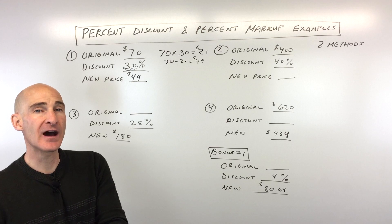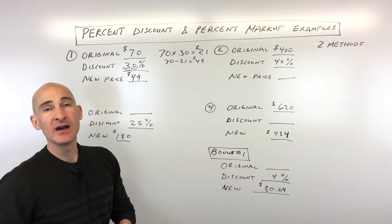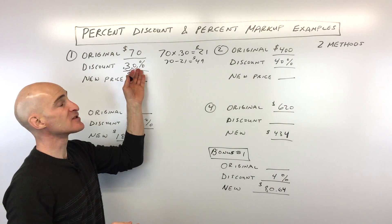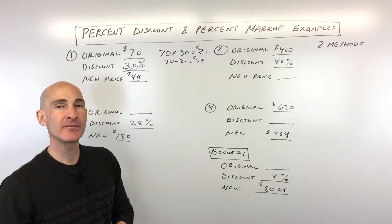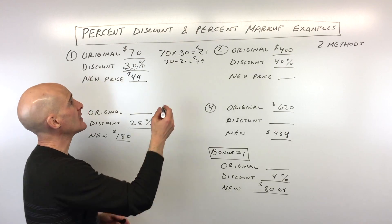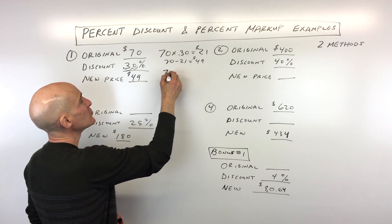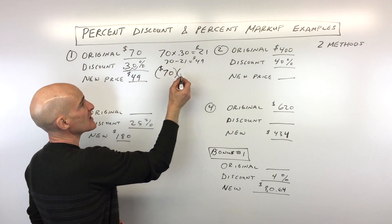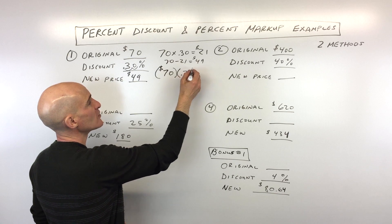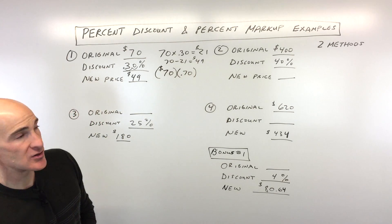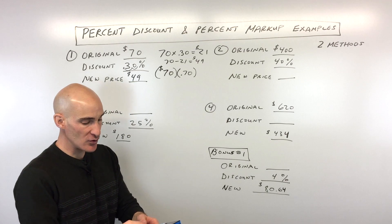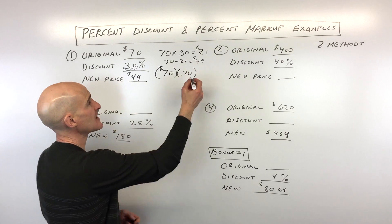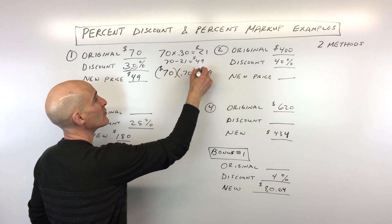Here's a quicker method: instead of focusing on what you're saving, focus on what you're paying. If it's 30% off, what percentage would you be paying? You'd be paying 70%. So take $70 and multiply by 70%, which as a decimal is 0.70 — just move the decimal two places to the left. Multiply 70 times 0.70 and we get $49, the exact same answer as method one.